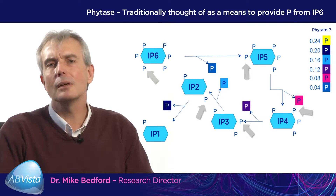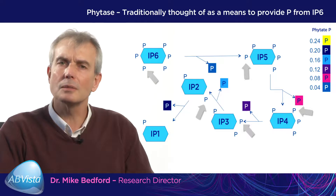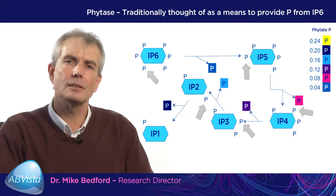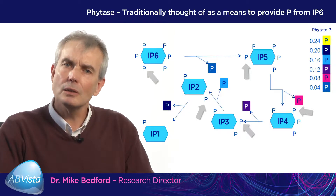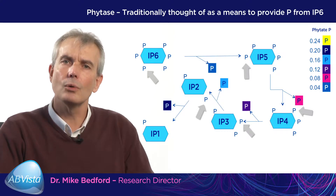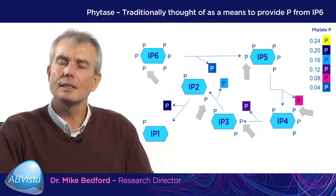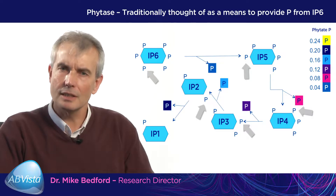Most people are looking at removing approximately 50% of the phosphorus from phytic acid. So we are still looking at a considerable amount of IP6, IP5, IP4 and IP3 left in the gut of the animal undigested.